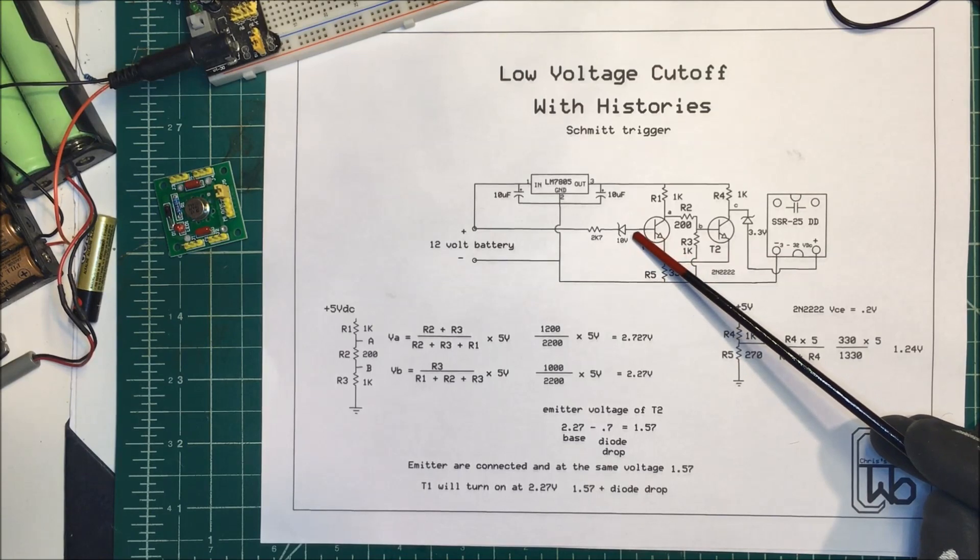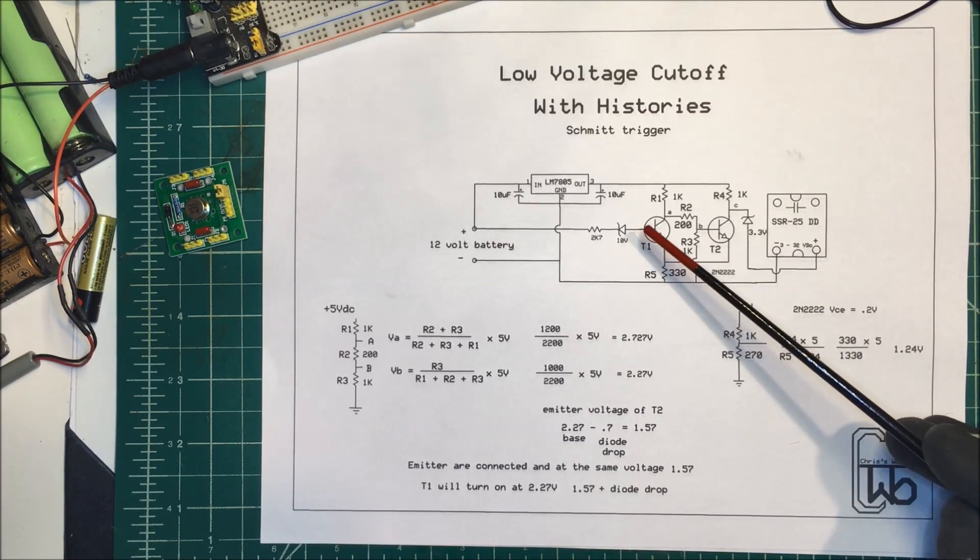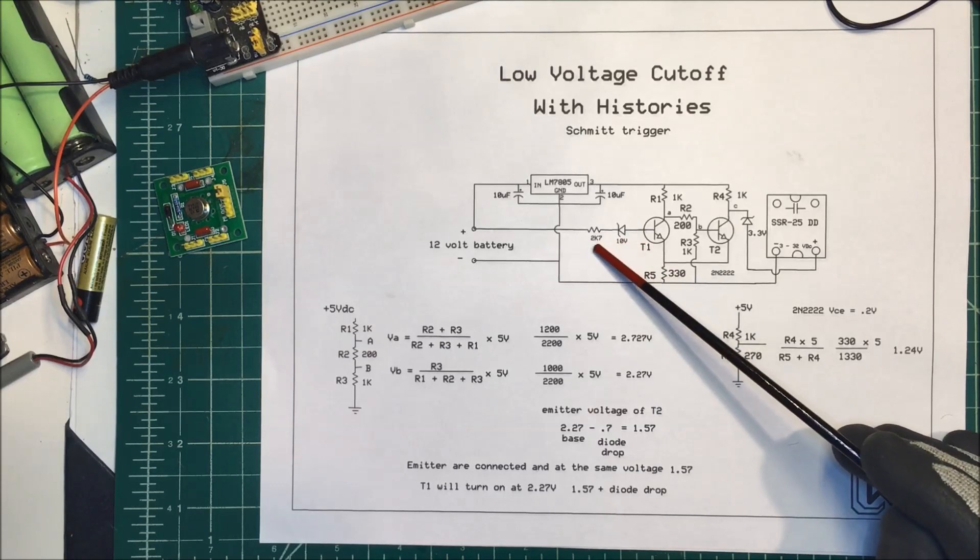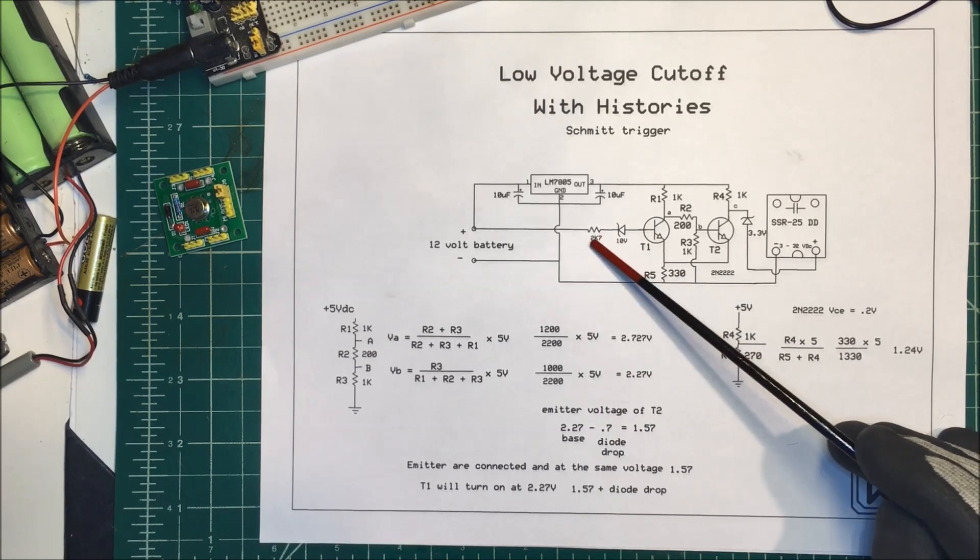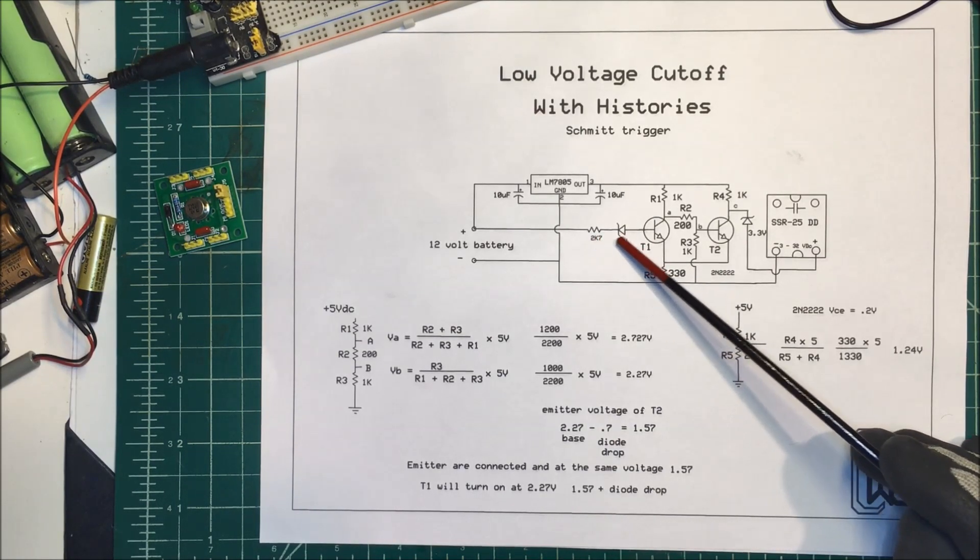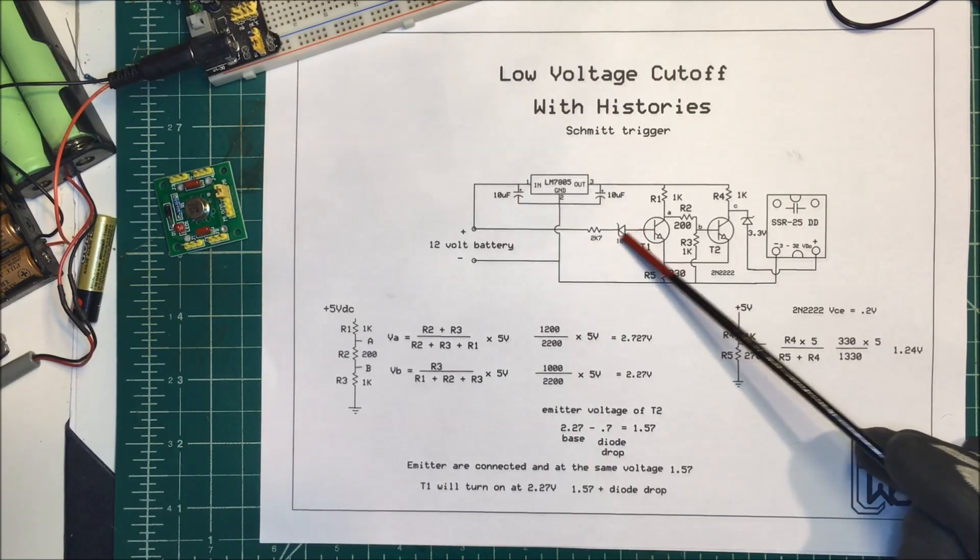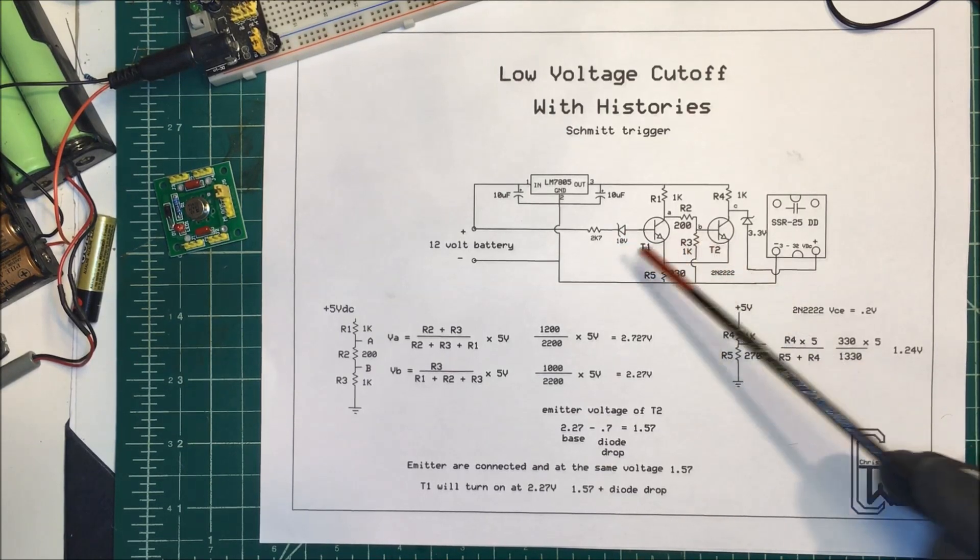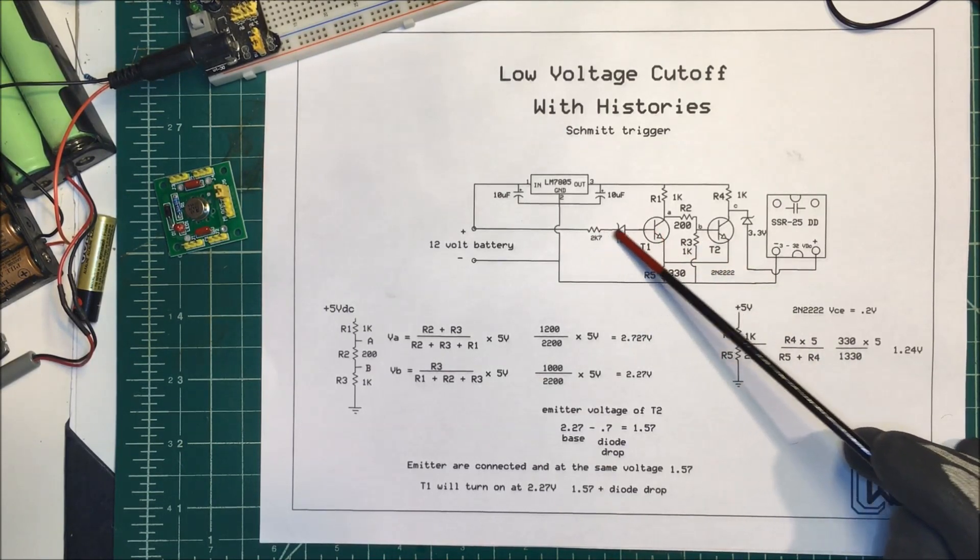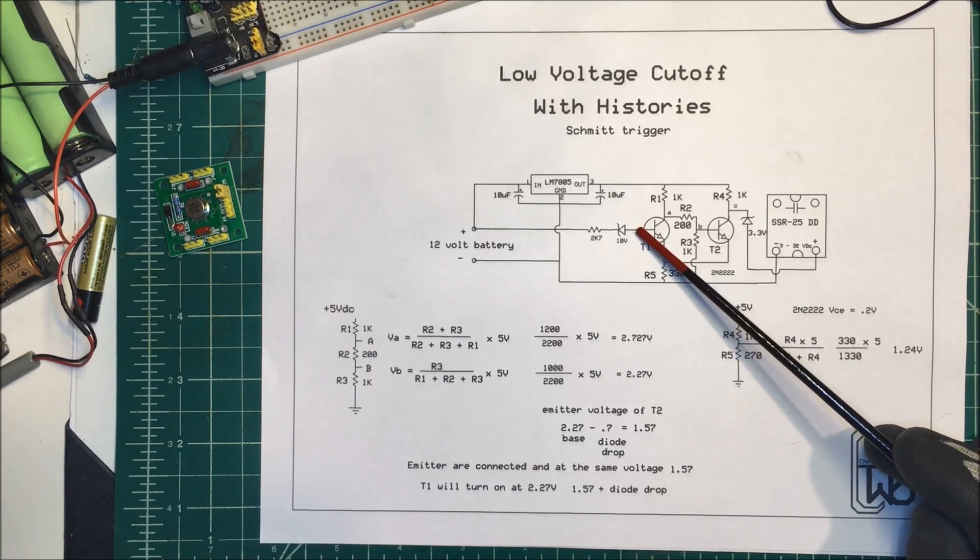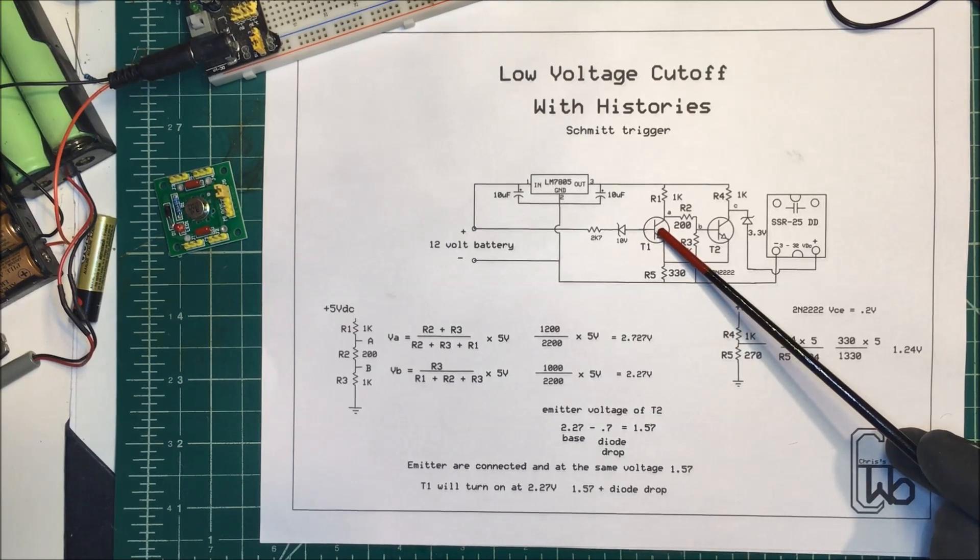So I'm using a resistor here to limit the current and a 10 volt zener here so that this won't turn on below 10 volts. So when the battery voltage increases the voltage here will rise up above 2.27 volts this transistor will turn on.